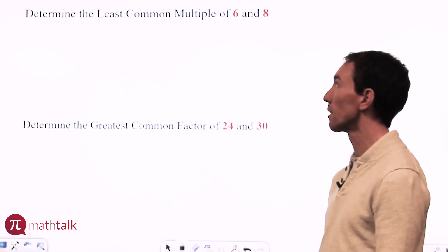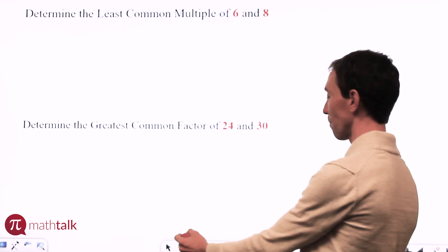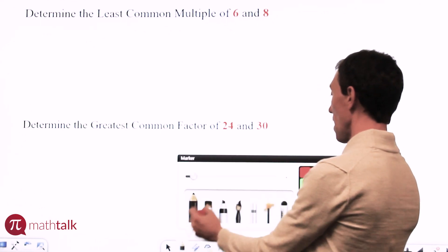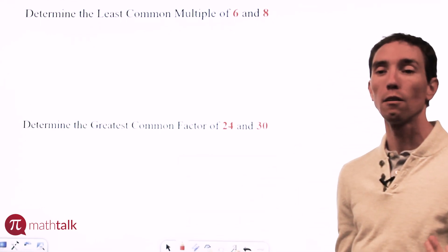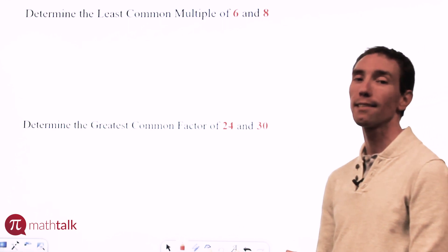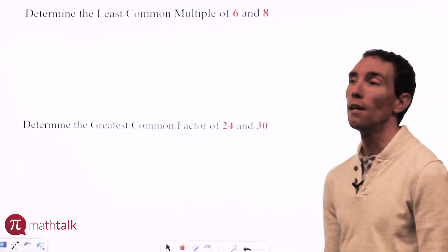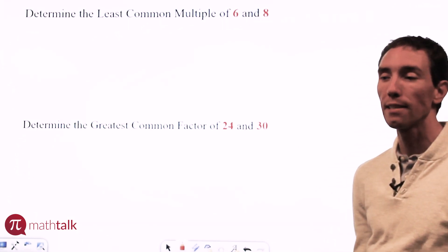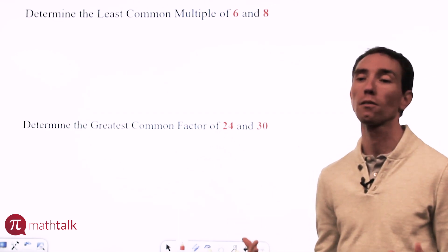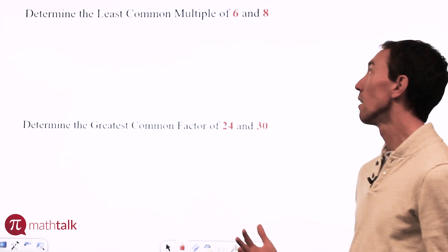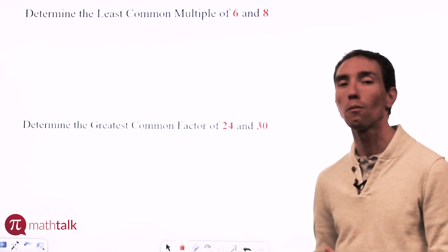We have one that says: determine the least common multiple of 6 and 8. To solve this problem you need to know what the least common multiple is. A multiple of a number is basically counting by that number. So for sixes you're counting by sixes: 6, 12, 18, 24, and so on.